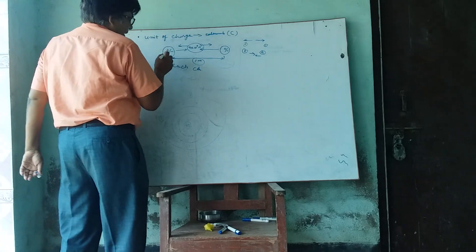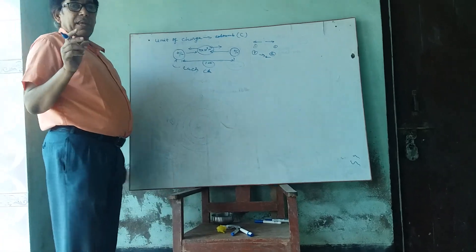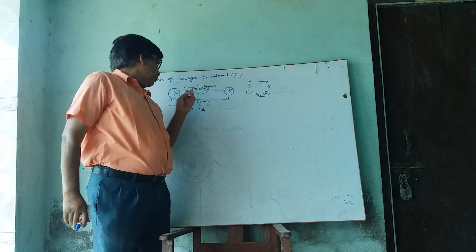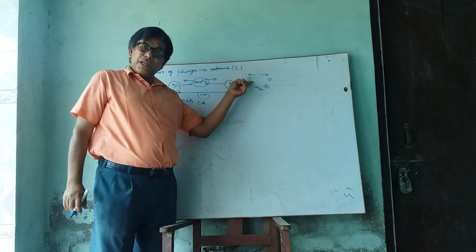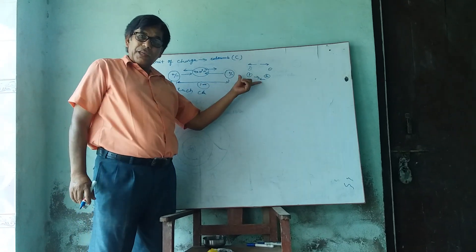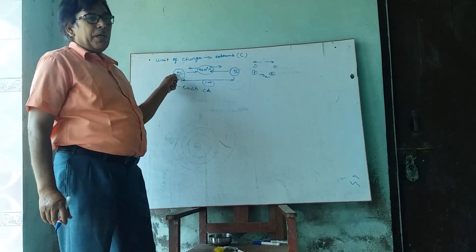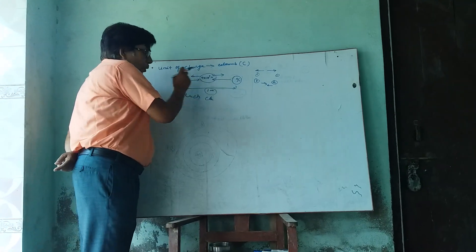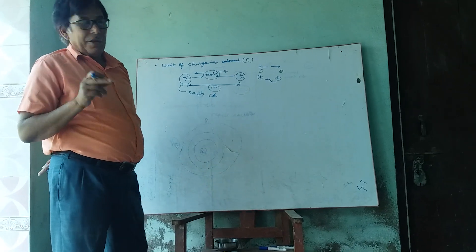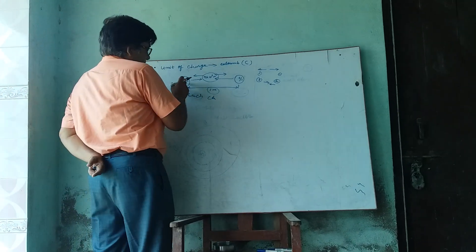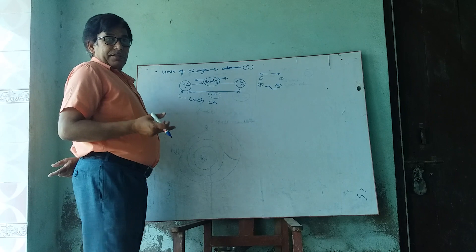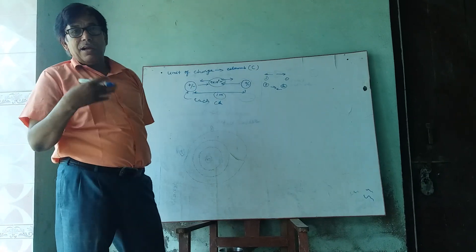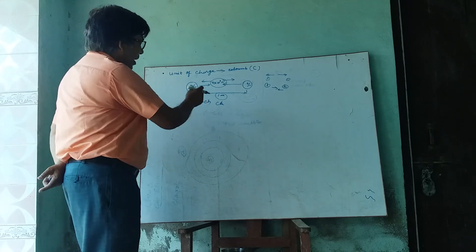If two equal charges, whether they are positive or negative — both of them may be positive, both of them may be negative, or one will be positive and the other negative — if they are like charges, there will be repulsion between them. If they are unlike charges, there will be attraction between them.